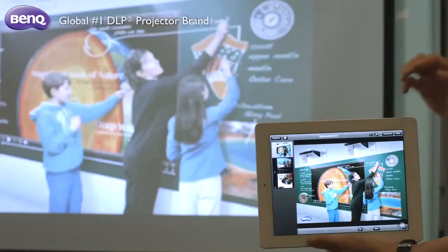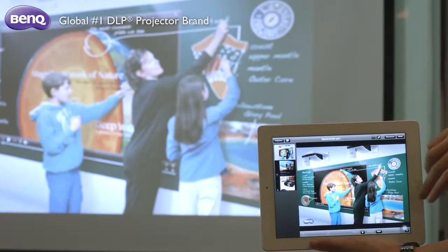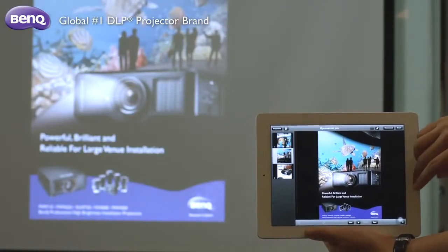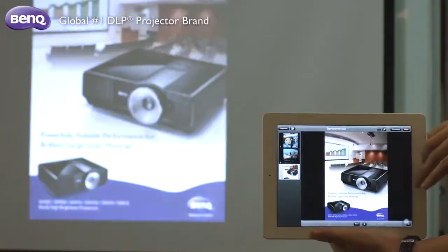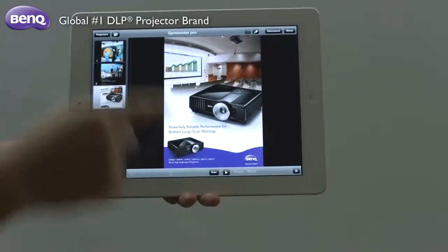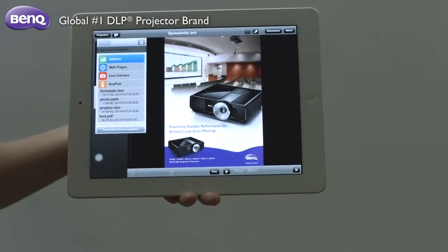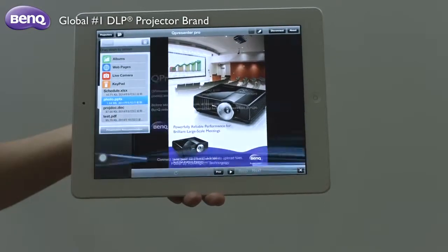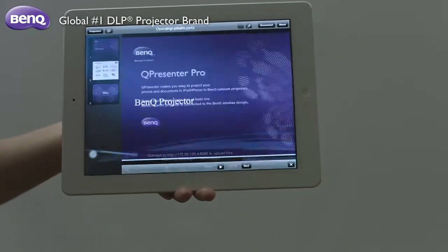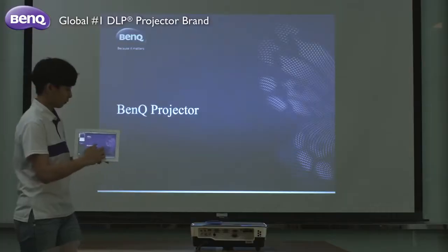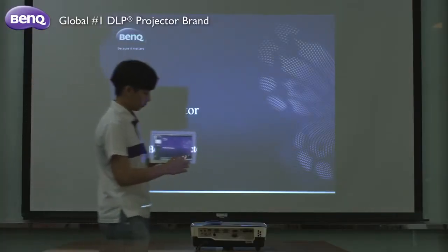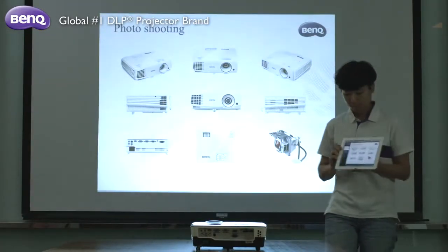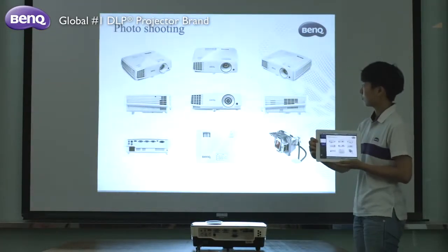You can display photos from your mobile device by tapping the photo icon and selecting the album you need. Tap the PowerPoint file saved in your mobile device. Here you can make annotations with the sketch function. The Q-Presenter Pro app also allows you to select other types of files saved on your mobile device.